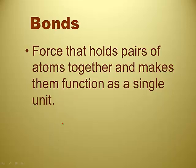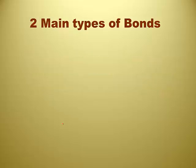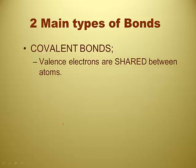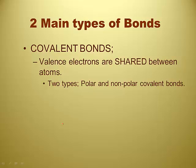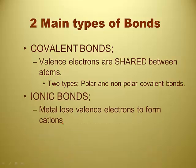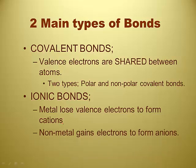Bonds are forces that hold pairs of atoms together and make them function as a single unit. There are two main types of bonds. There are covalent bonds, where the valence electrons are shared — and it turns out there are two types of covalent bonds: polar and nonpolar. And there are ionic bonds, where metals actually lose the valence electrons, forming cations, and the nonmetals gain those electrons to form anions.